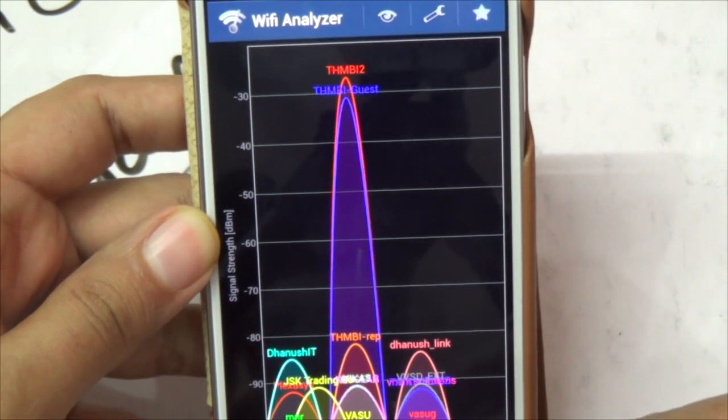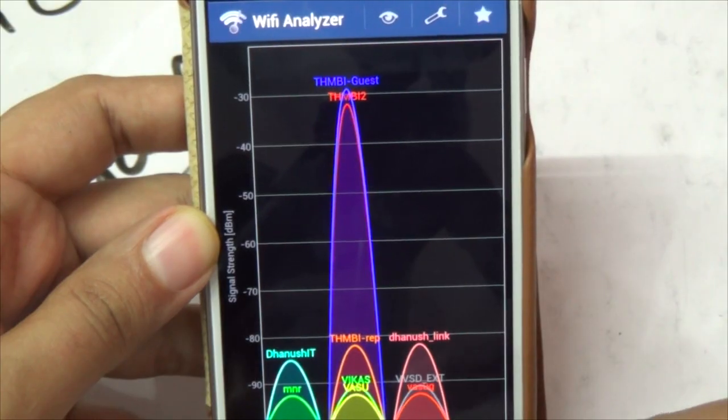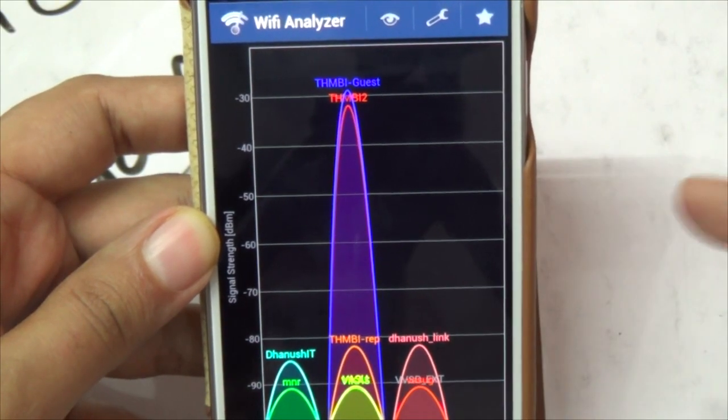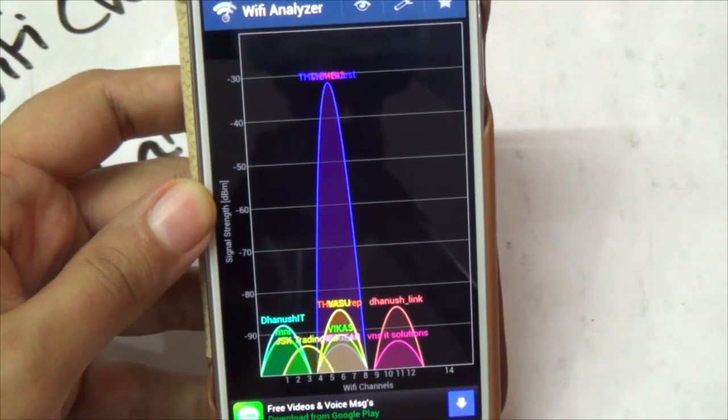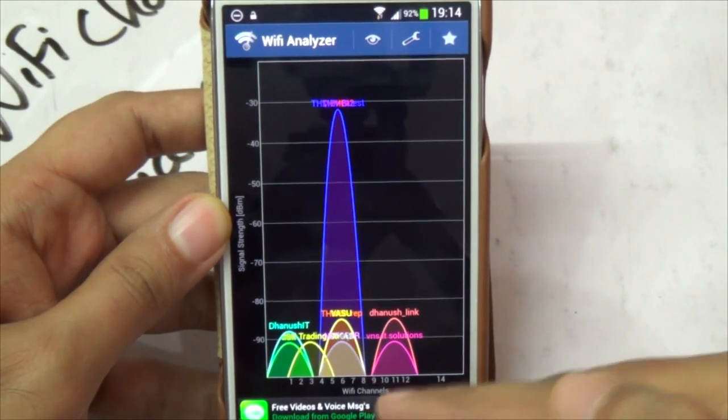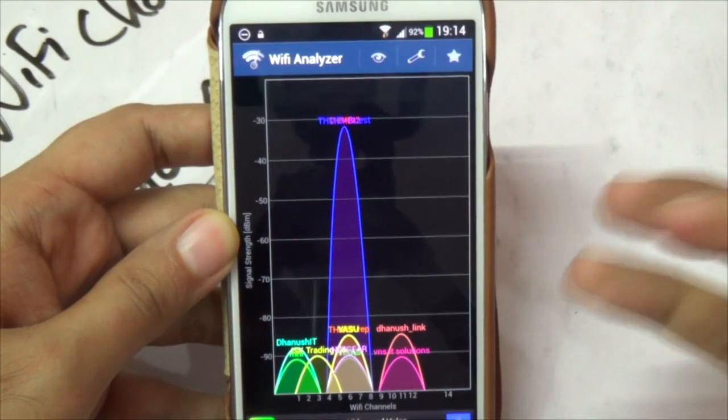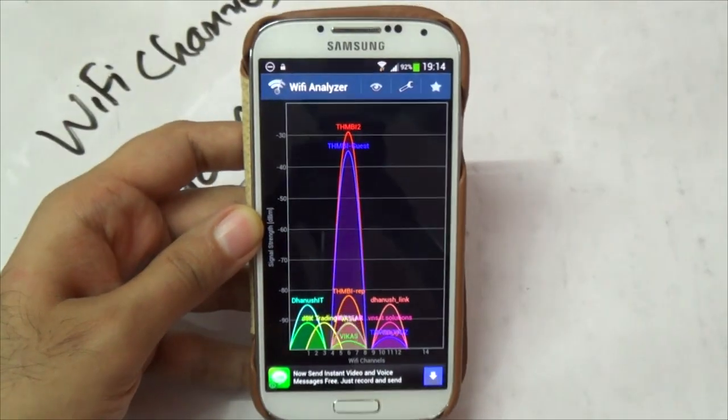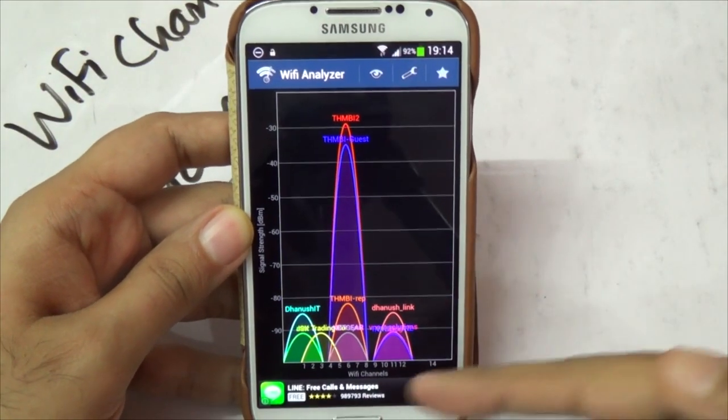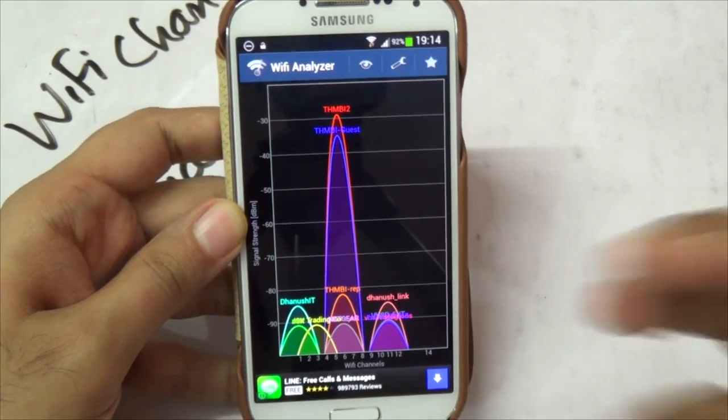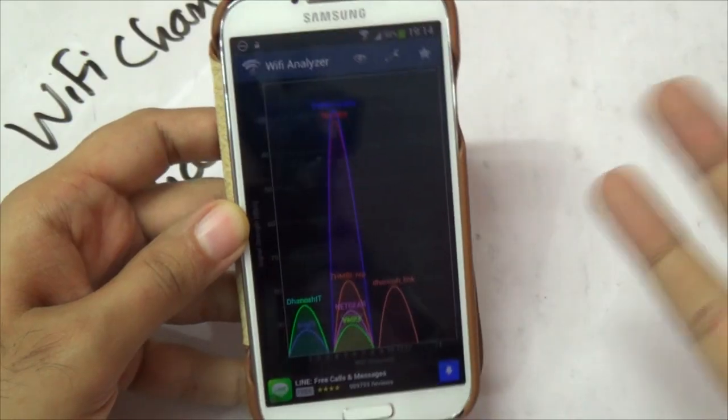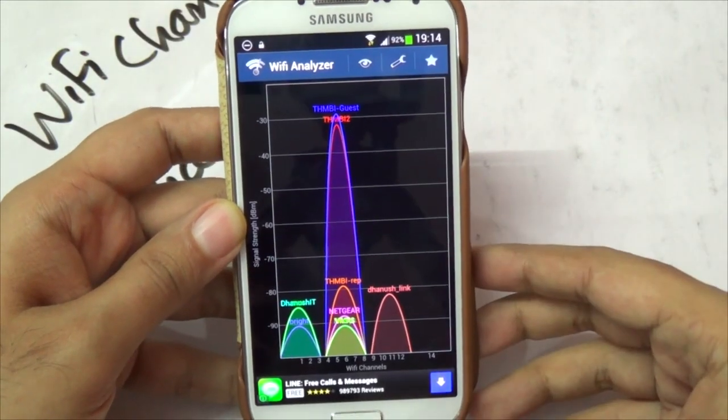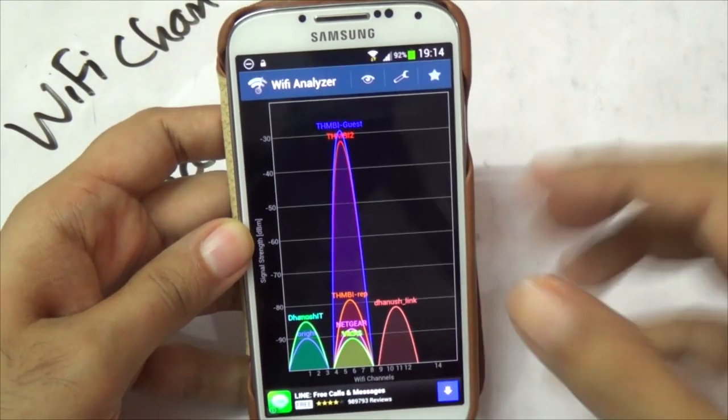For example, this is my Wi-Fi network. It's on channel number six, hence it's overlapping with these. Ideally I would say it looks like channels seven, eight, nine, ten are not that crowded. So to get the best range I should change my Wi-Fi channel to something like this. You need to look at utilities like this to determine which channel is empty in your area and set your Wi-Fi network to that channel.